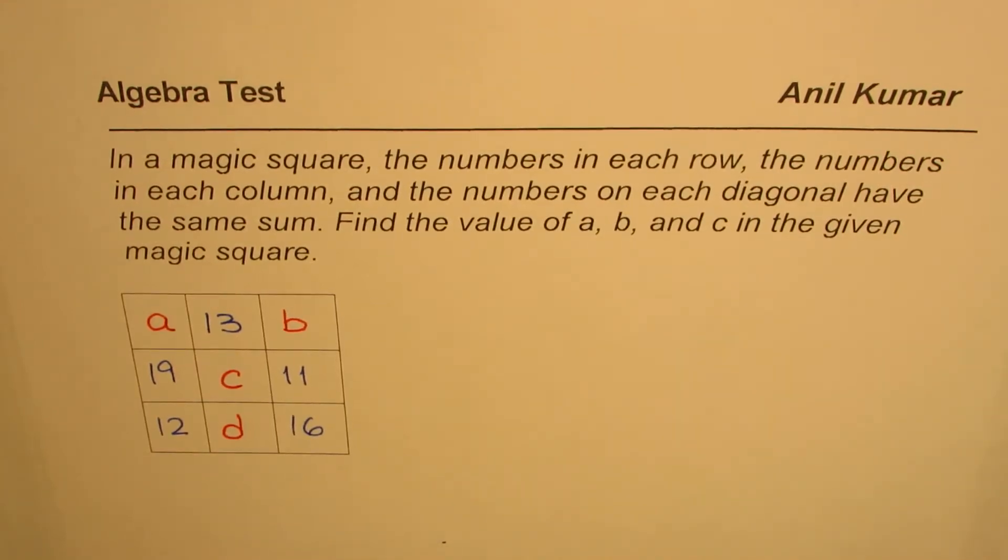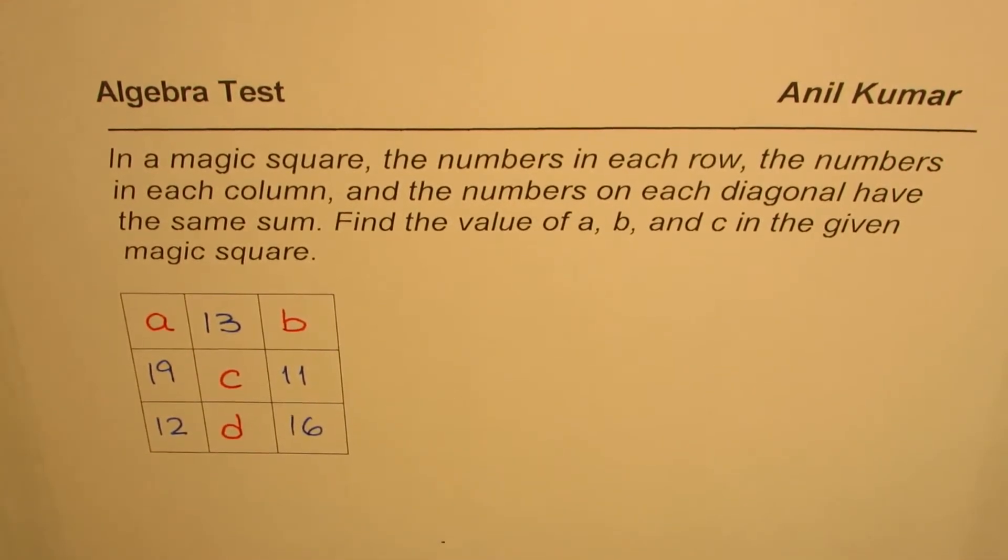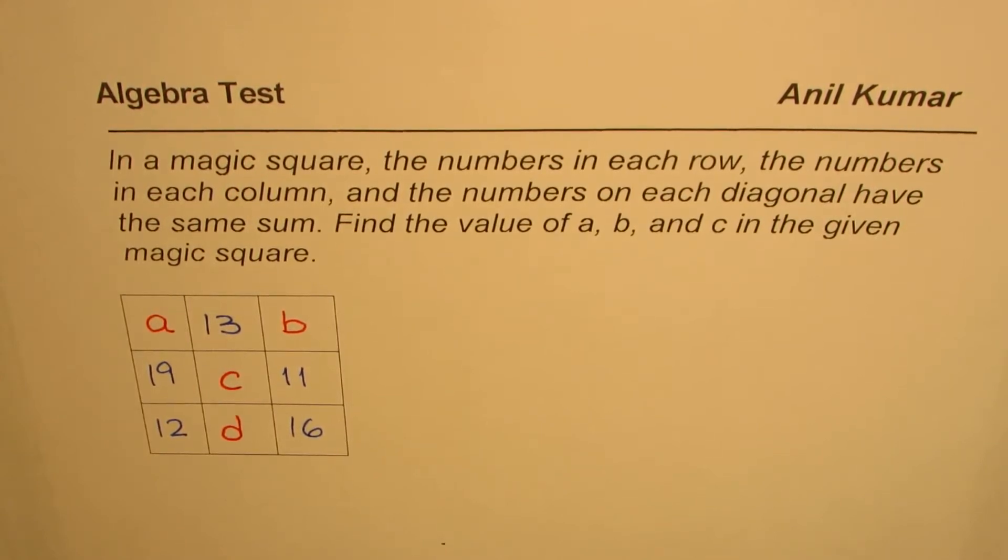I'm Anil Kumar, sharing with you a question from a test paper. In a magic square, the numbers in each row, the numbers in each column, and the numbers on each diagonal have the same sum.